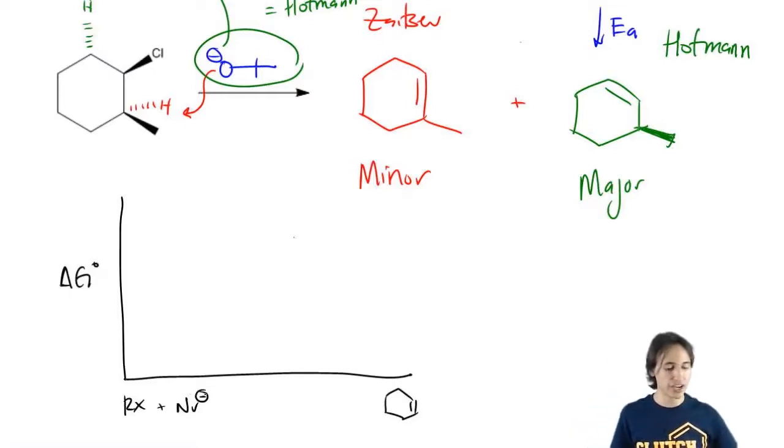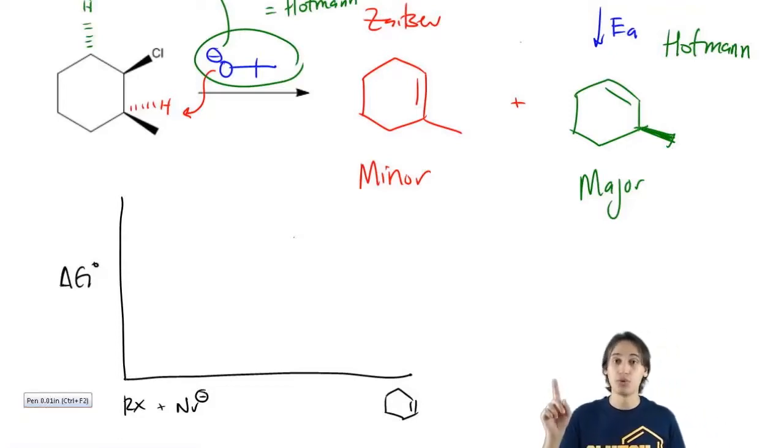This is a concerted reaction, so it all happens at the same time. I'm only going to have one hump, one transition state. Remember that E2 just has a transition state.